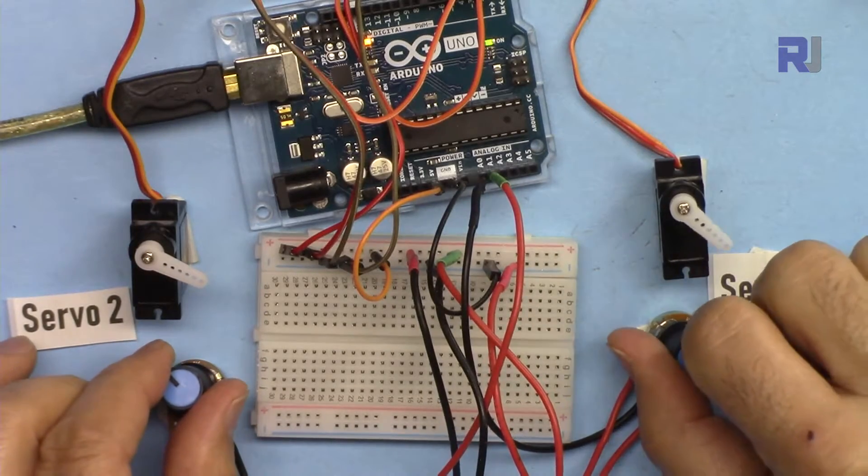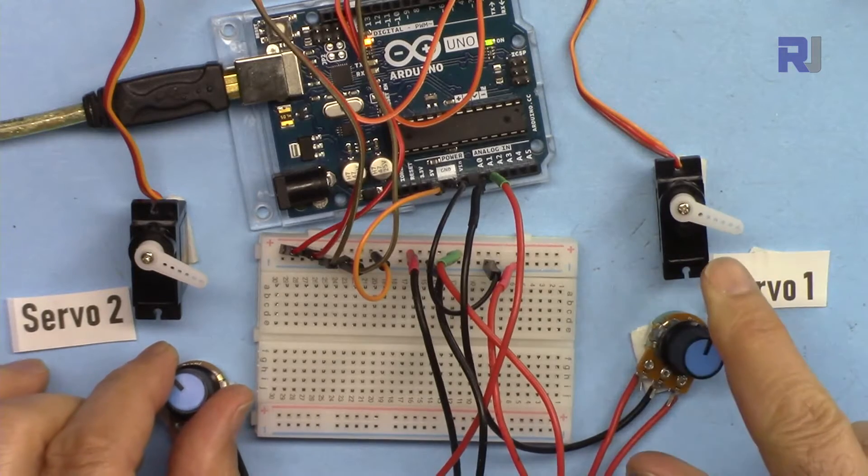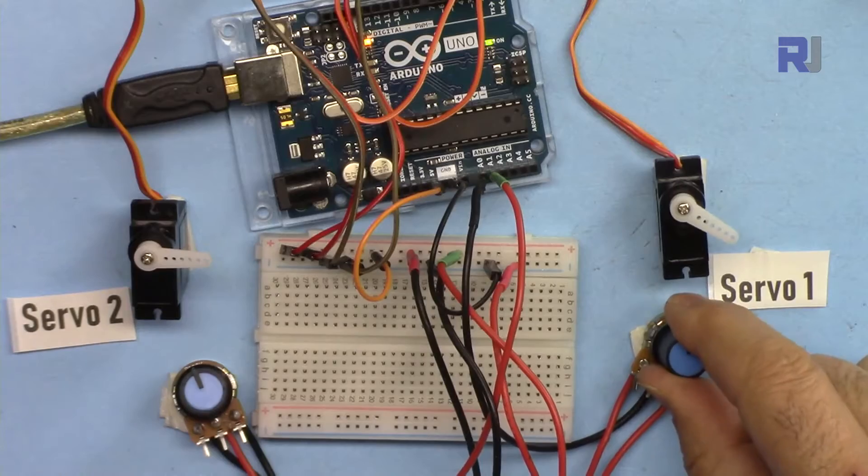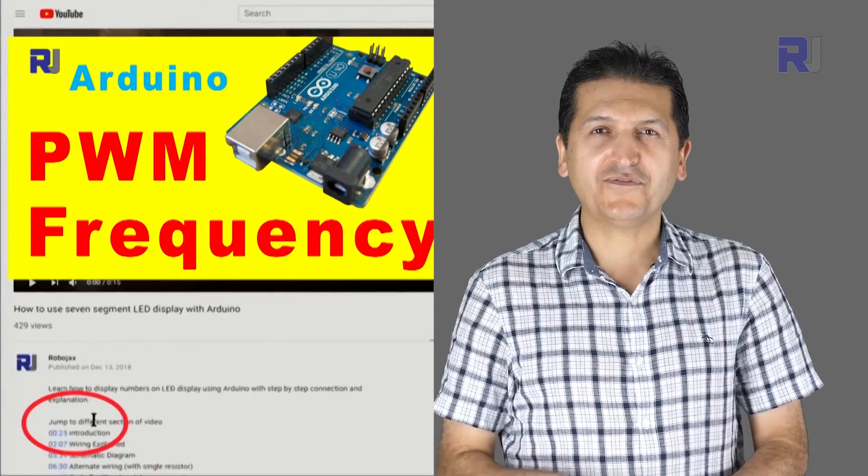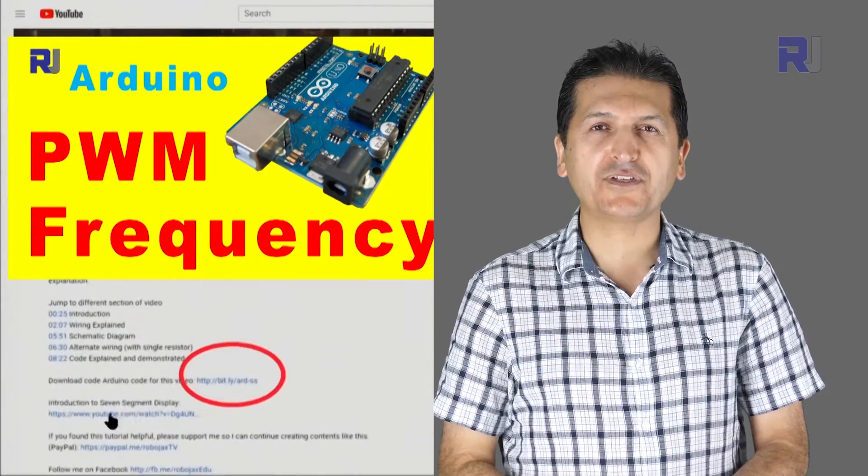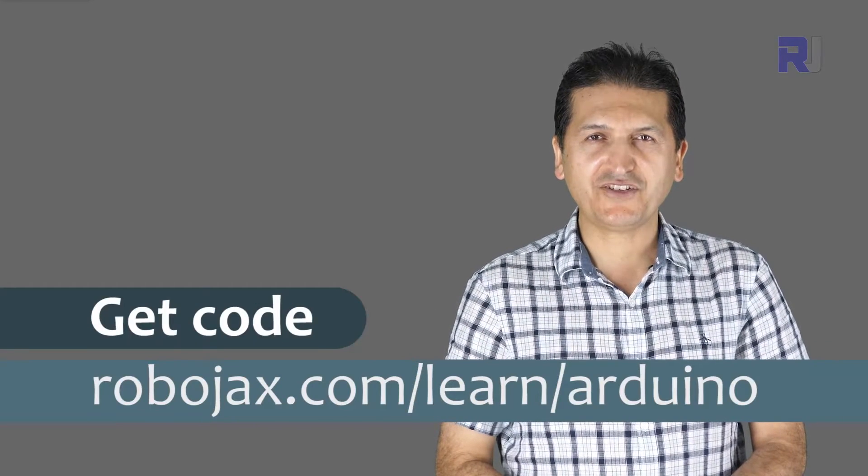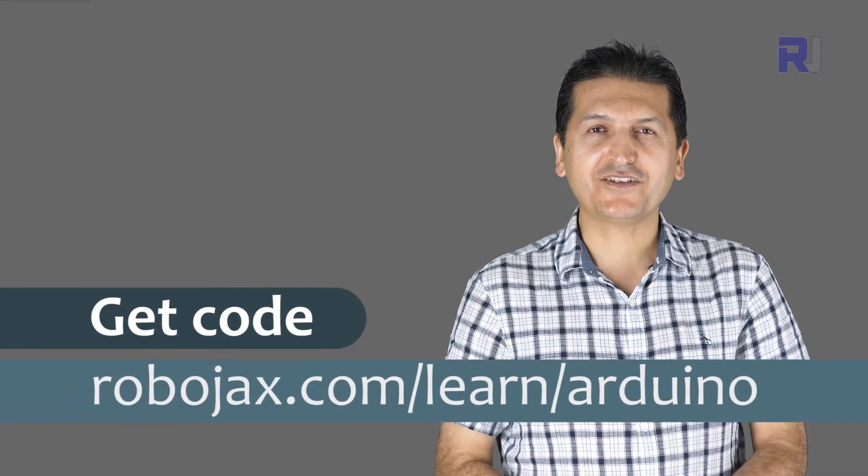You will have independent servo control for servo one or servo two together or one of them. You can get the code for this by clicking the link below the video in the description which will take you to robojax.com/learn/Arduino. Let's get started with this.